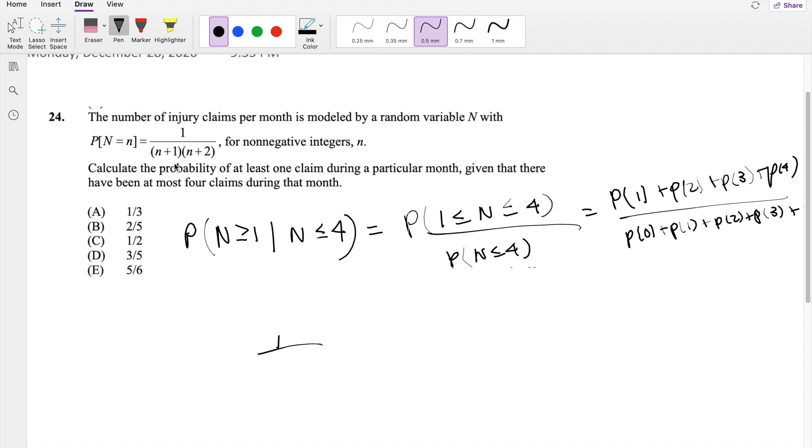So the probability of 1 is 1 plus 1, which is 2, times 1 plus 2, which is 3. And likewise, I can go on like that, 3 times 4, 4 times 5, and lastly, 5 times 6.